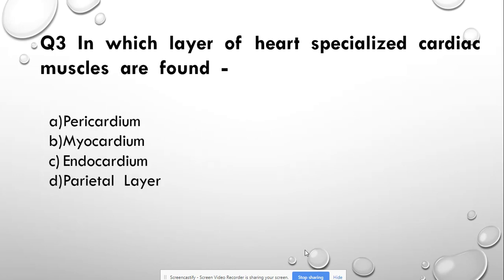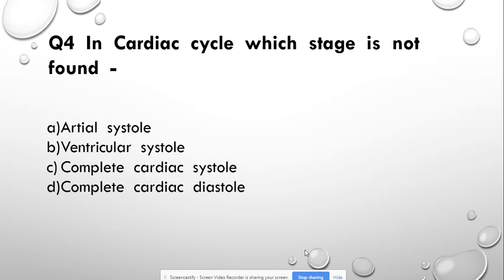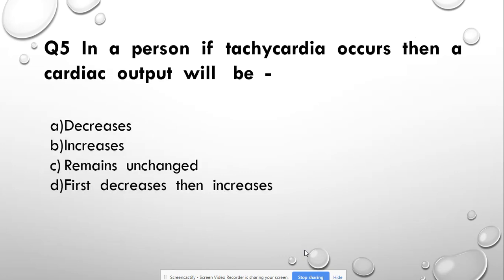Question number 3: In which layer of the heart are specialized cardiac muscles found? Options: pericardium, myocardium, endocardium, and parietal layer. Answer: myocardium. Question number 4: In the cardiac cycle, which stage is not found? Options: arterial systole, ventricular systole, complete cardiac systole, and complete cardiac diastole. Answer: complete cardiac diastole.